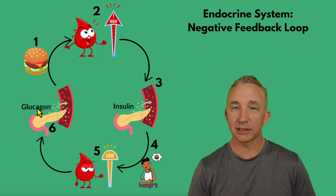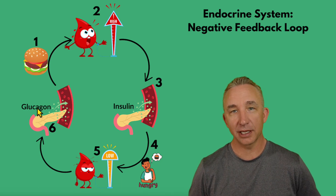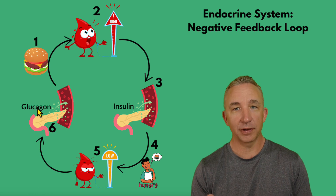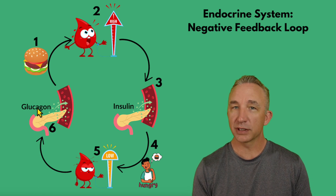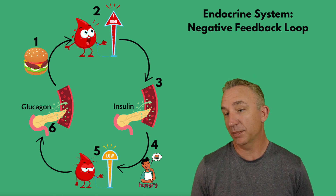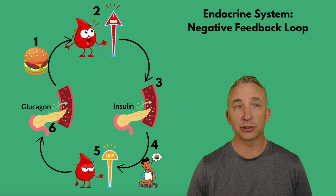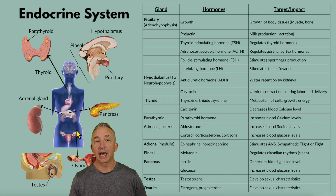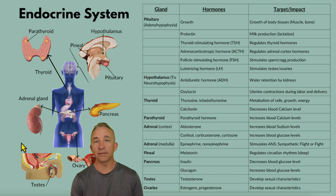Our hormone system — the endocrine system — involves hormones constantly flowing through our body in conjunction with the nervous system. Many structures overlap with those discussed in the nervous system, and when we look at the hormones, they all serve the common good of homeostasis. This has been an overview of the endocrine system.